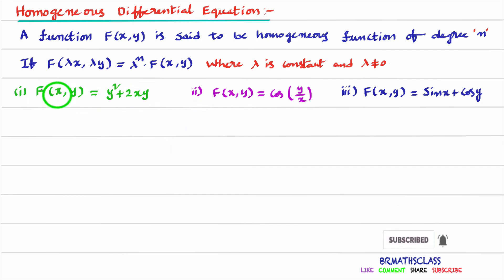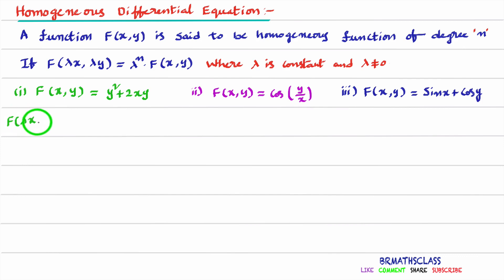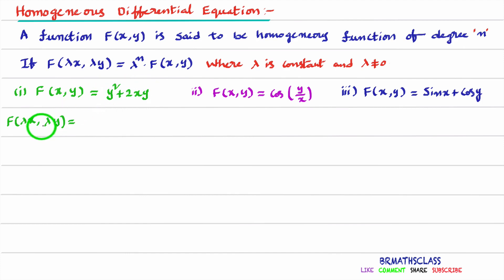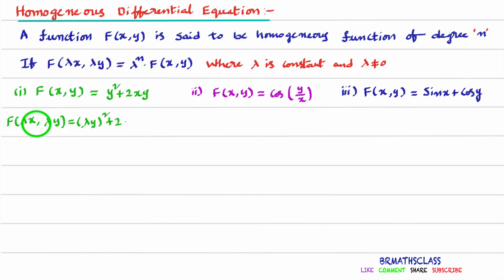Observe this first function in terms of x and y. To check whether it is a homogeneous function, I will calculate f(λx, λy). Wherever x appears, write λx; wherever y appears, write λy. So you get (λy)² + 2·(λx)·(λy).